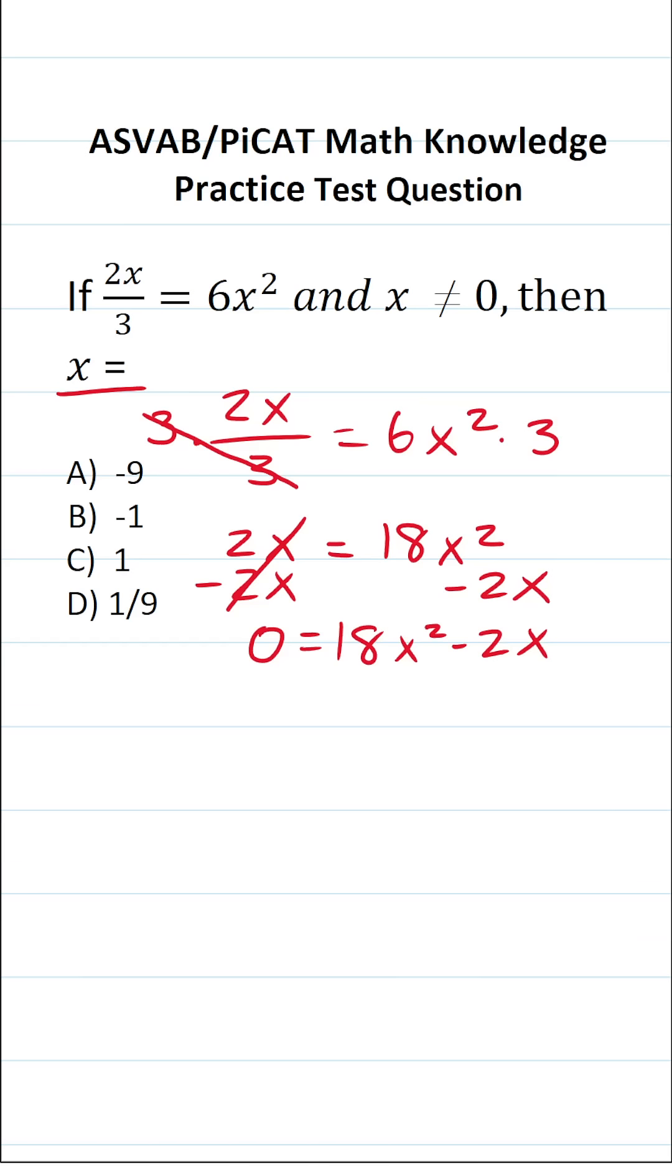Now personally I like having my letter variables on the left hand side of the equation so I'm just going to rewrite this accordingly. This becomes 18x squared minus 2x equals zero.